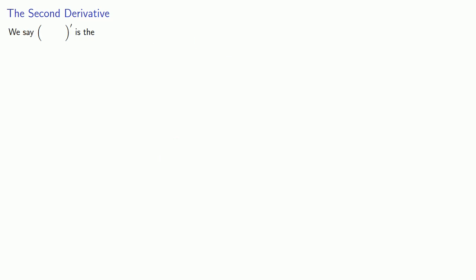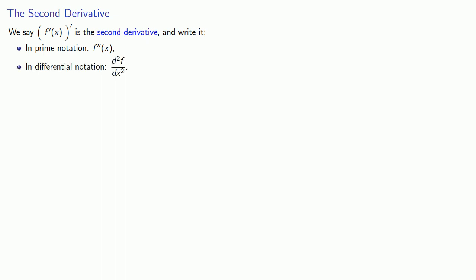So we have to consider the derivative of the derivative, and in a fit of mathematical creativity we'll call this the second derivative. In prime notation, the second derivative is written with two primes — f double prime. In differential notation it's written as d²f/dx², where the superscript 2 is above the d and above the x, not attached to the f on top or the d on the bottom. We can also indicate the second derivative in subscript notation as f subscript xx.